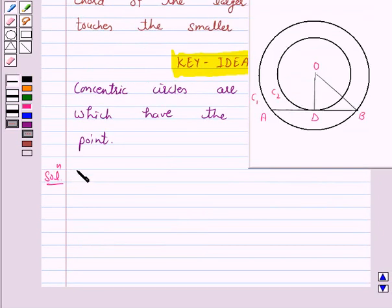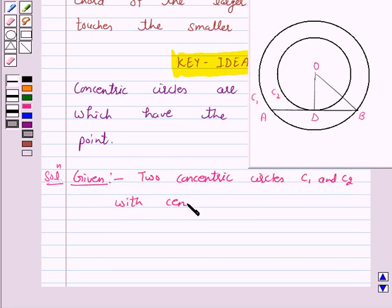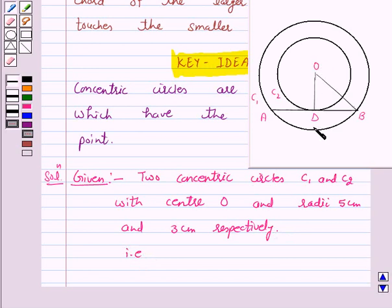Now we are given two concentric circles C1 and C2 with center O and radii 5 cm and 3 cm respectively. That is, OD is 3 cm and OB is 5 cm.